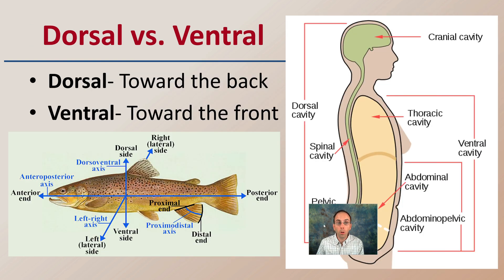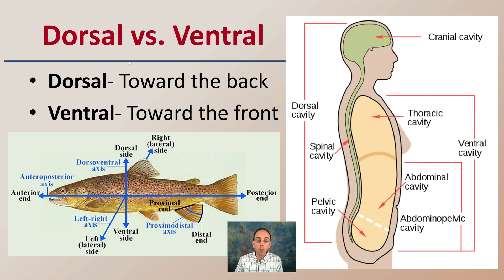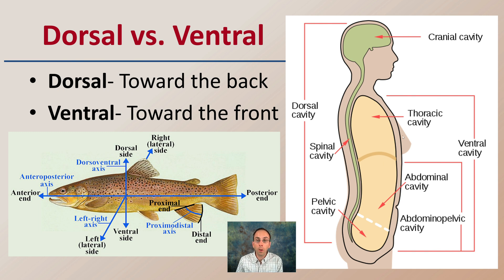We also have terms called dorsal and ventral. Dorsal is towards the back and ventral is towards the front. I have the picture of the fish here because a lot of times we think of the dorsal fin, which is on the top — it's on the back of the fish — and the ventral side is the underside. Relating this to humans, the dorsal cavity is where the backbone and vertebrae are, and the ventral cavity is more towards the front where the chest and stomach are located. Keep in mind dorsal and ventral no matter what the orientation of the organism is.